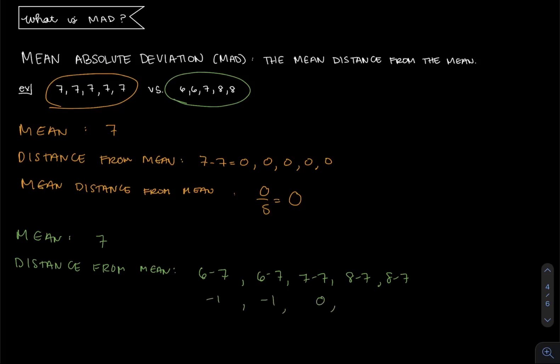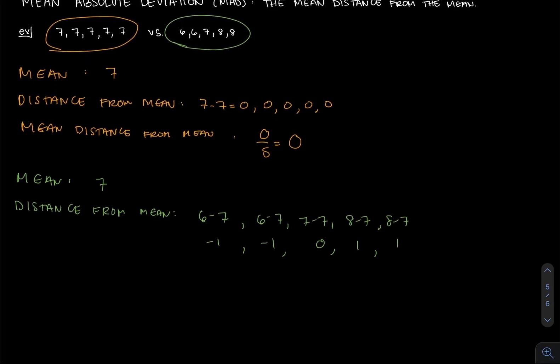Well that's negative 1, negative 1, 0, positive 1, and positive 1. When you do mean absolute deviation, you actually look at the absolute value of all of these numbers. In this case it's going to be 1, 1, 0, 1, and 1. So our mean distance from the mean is going to be four fifths.